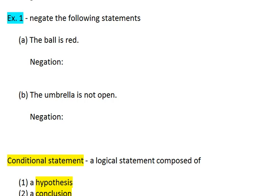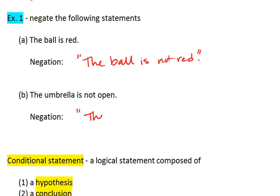The negation of 'the ball is red' is the opposite, and that would be 'the ball is not red.' The negation of 'the umbrella is not open' would be its opposite, which is 'the umbrella is open.'